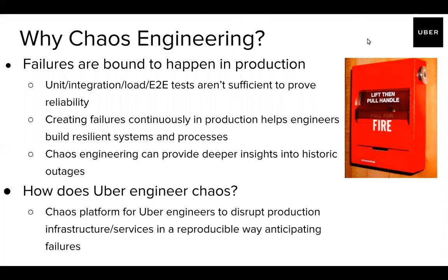Chaos engineering can also provide deeper insights into historic outages. You might already be tracking postmortems of what happens to your service — how can you recreate that scenario in a safe way to understand why that outage happened and how to prevent it in the future? We've built a chaos platform that allows engineers to do just that with infrastructure and services in production, in a reproducible way, and anticipate those failures. I added an image of a fire alarm here to drive in the analogy — it's like doing a fire drill for your own service. As a service owner, I'd expect that if I ran some kind of kill scenario on one of my hosts, things should work out fine. But sometimes that doesn't happen, and things change over time.